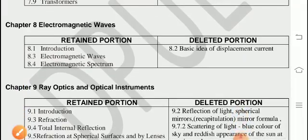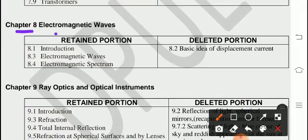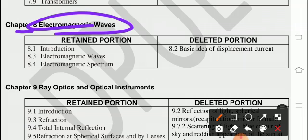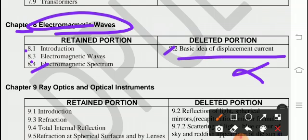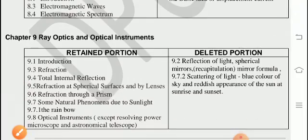From chapter 8, Electromagnetic Waves. Three points are there. First introduction, second, third point, Electromagnetic Waves and the fourth point, Electromagnetic Spectrum. Second point, basic idea of Displacement Current, that's deleted. So now no need to read.